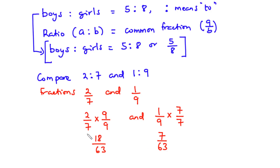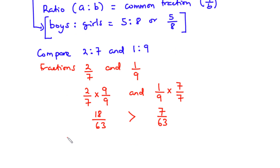We can now compare the numerators. The numerator here is eighteen and the numerator here is seven, so eighteen over sixty-three is greater than seven over sixty-three. Therefore the ratio two is to seven is greater than one is to nine.